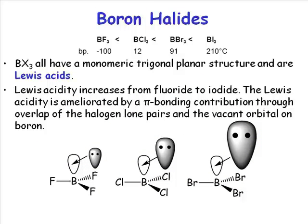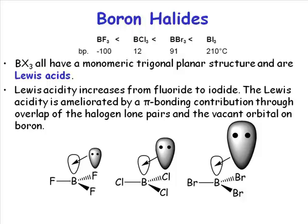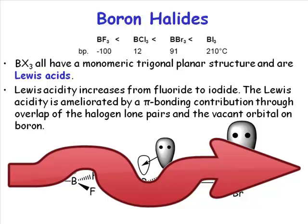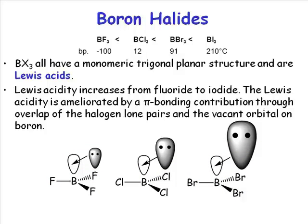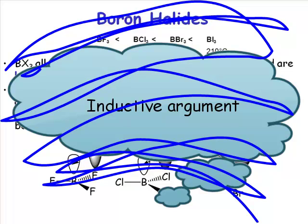All of these boron halides have different Lewis acidity. The trend in Lewis acidity that you observe is not perhaps the one that would be first intuitive to you. If we were to just consider the electronegativity of the halide atoms — fluorine is the most electronegative — then in terms of inductive effects, fluorine has the strongest negative inductive effect, pulling electron density away from the boron. So you might expect boron trifluoride to be the strongest Lewis acid and boron triiodide to be the weakest. But actually, if you do the measurements, it's not the case. The trend is in the opposite direction: boron triiodide is the strongest Lewis acid and boron trifluoride is the weakest. A simple inductive argument doesn't explain this trend.